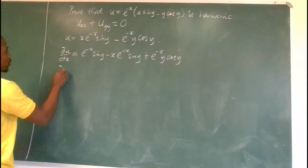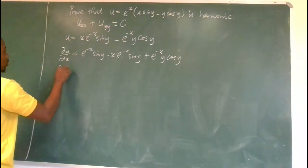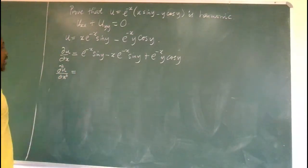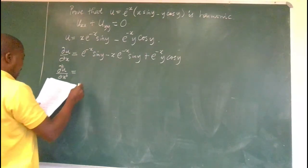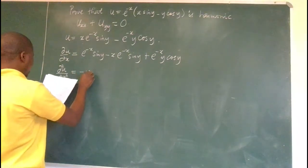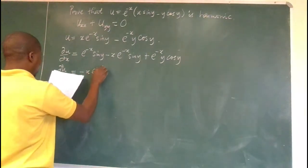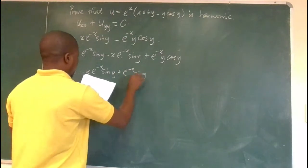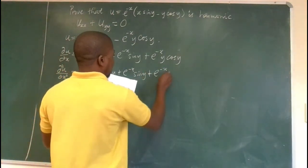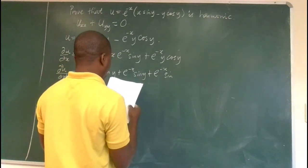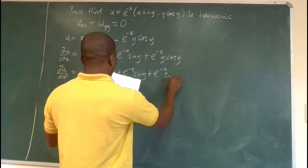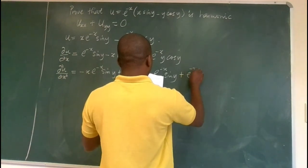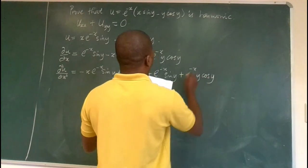Now let's compute the second partial derivative, del squared u over del x squared. Differentiating further, we end up with minus x e to the power of minus x sin y, plus e to the power of minus x sin y, plus e to the power of minus x y cos y.